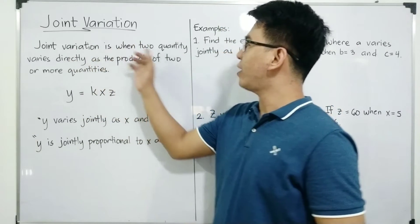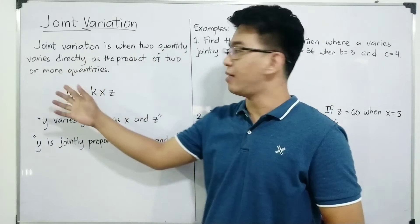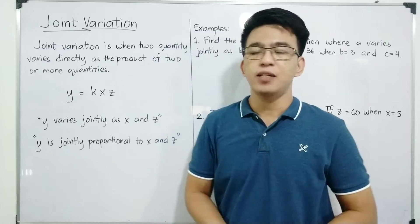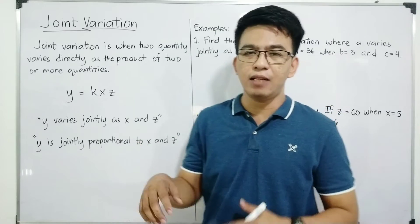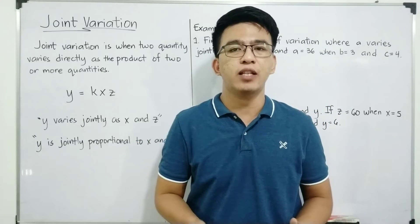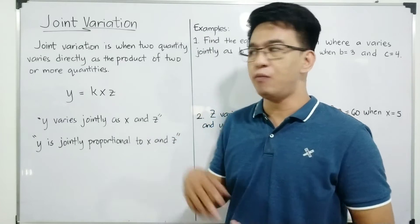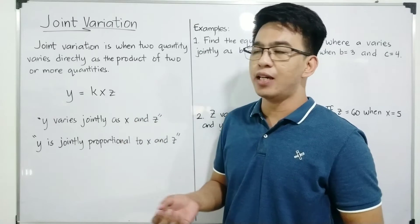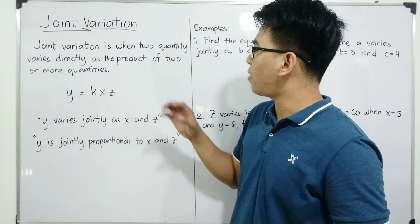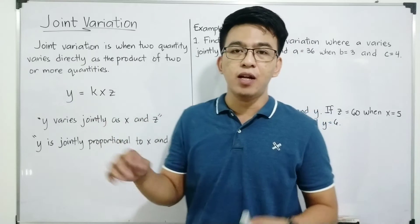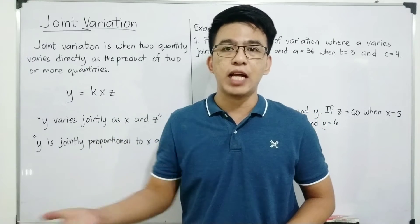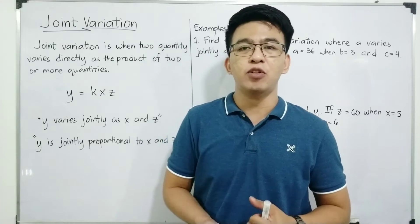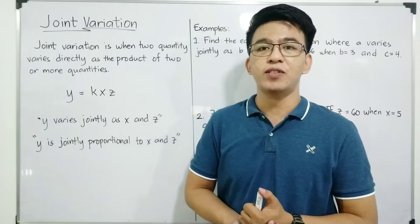Joint variation is when a quantity varies directly as the product of two or more quantities. We have direct variation which is the relationship between two variables, same with inverse. When it comes to joint variation, the difference is it involves the product of two or more quantities — three or more variables are involved. We can say joint variation is a combination of two direct variations.